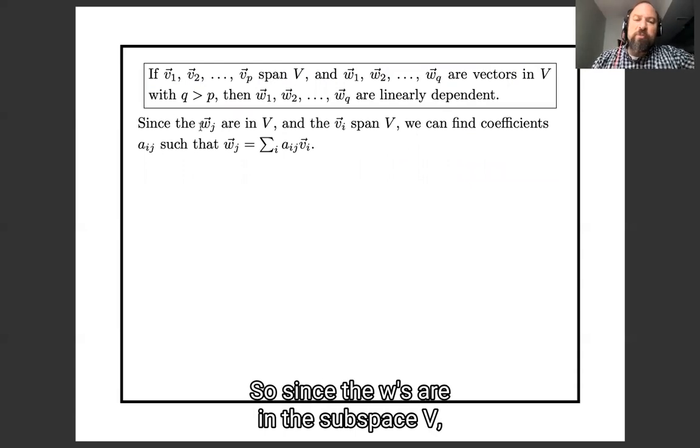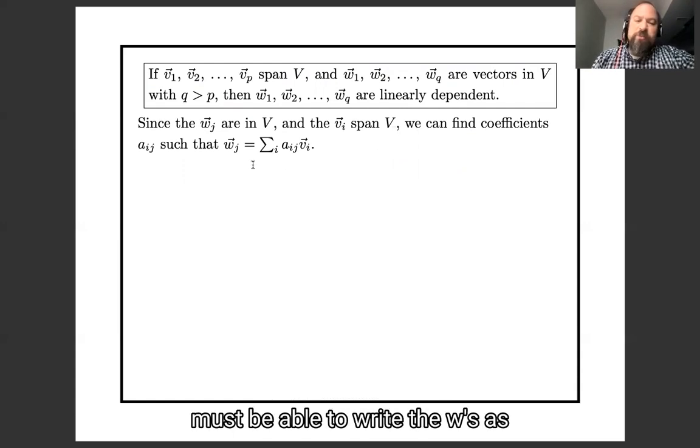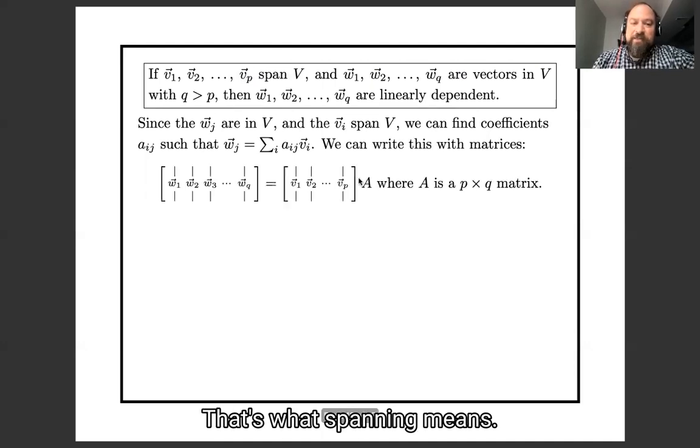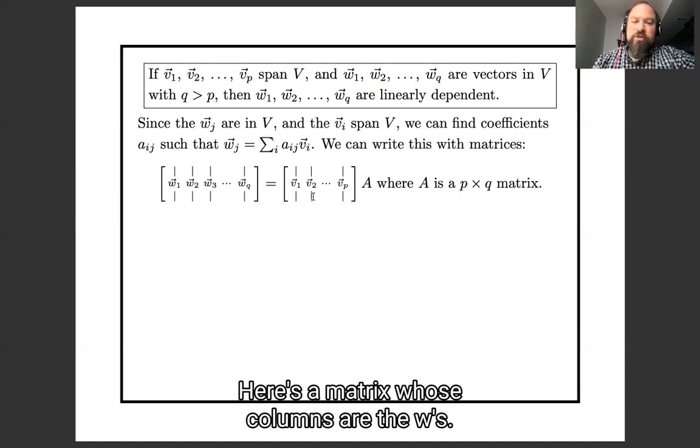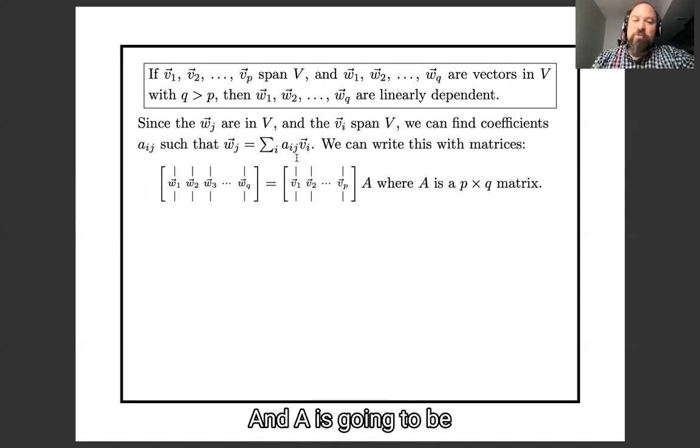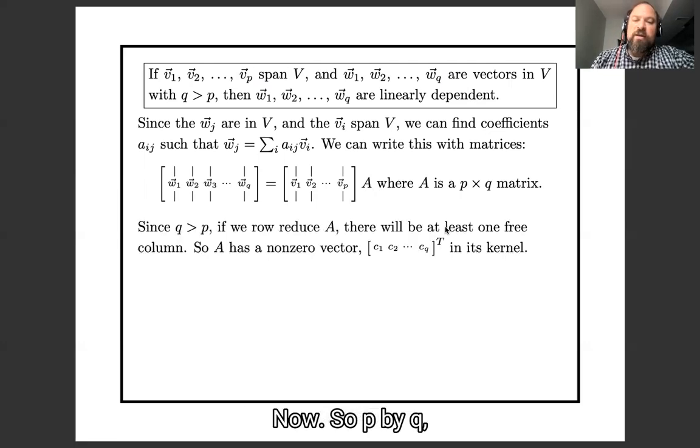Since the w's are in the subspace V, and the v's span the subspace V, we must be able to write the w's as a linear combination of the v's. That's what spanning means. And I'll write this out with matrices. Here's a matrix whose columns are the w's, here's a matrix whose columns are the v's, and A is going to be the matrix of these aij's, that's a p by q matrix.